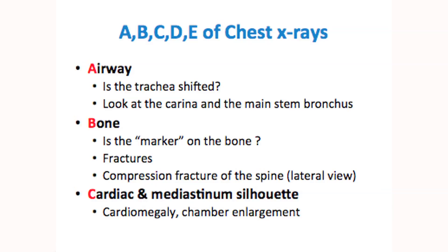C is for cardiac and the mediastinal structures. When we talk about the heart, if it's a PA film and cardiomegaly is noted, is the heart greater than 50% of the cardiothoracic diameter? Also, instead of just saying diffuse cardiomegaly, look at the different parts of the heart. Is it right atrial enlargement? Is it left atrial enlargement? Or what about the left ventricle? Try to be as specific as possible.